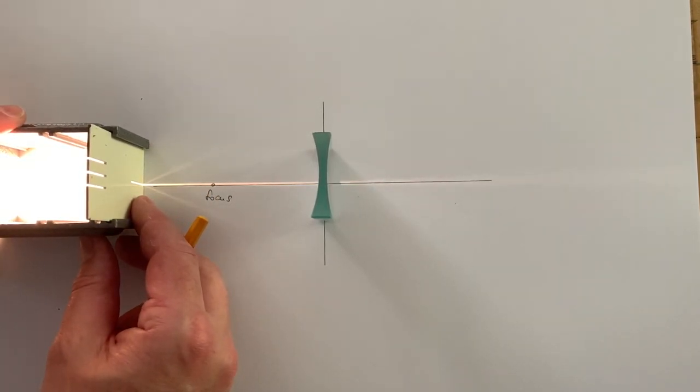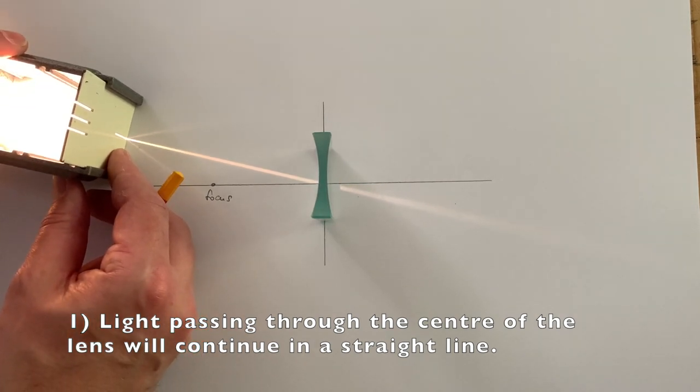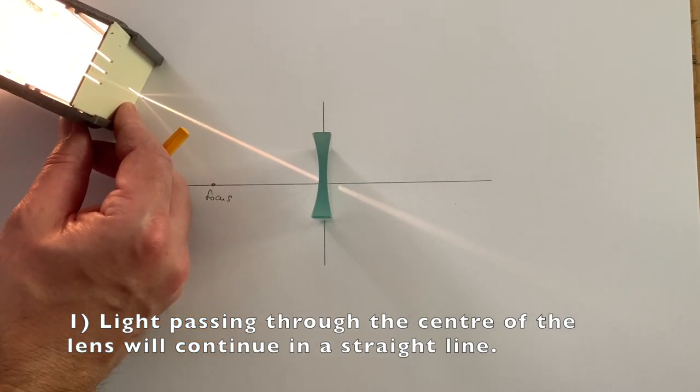The first is that any light travelling through the centre of the lens will always keep travelling in a straight line once it has passed through the lens.